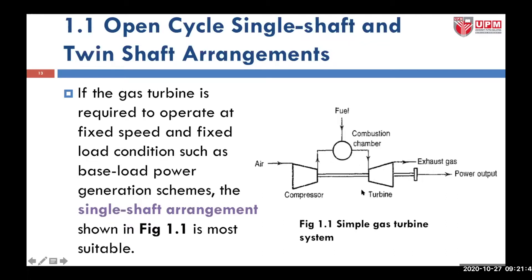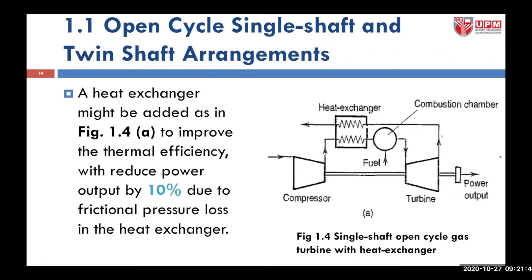In the middle we have the combustion chamber. This figure shows a single shaft open cycle gas turbine with a heat exchanger. A heat exchanger might be added to improve thermal efficiency — you want to make sure that heat losses are being utilized — but with a disadvantage of a reduced power output of 10%. This is due to frictional pressure loss in the heat exchanger, since the heat exchanger has its own performance, normally about 80% to 90% only.